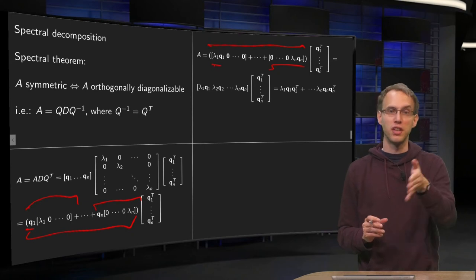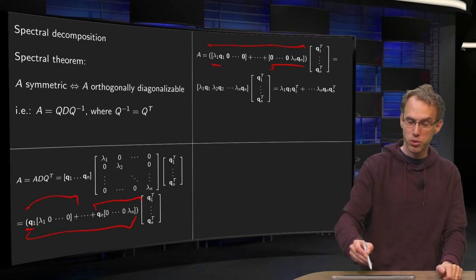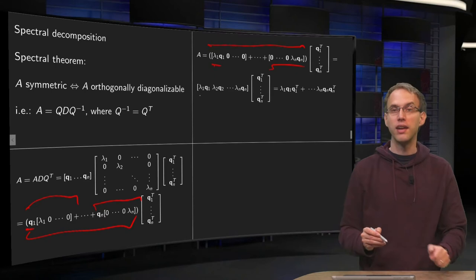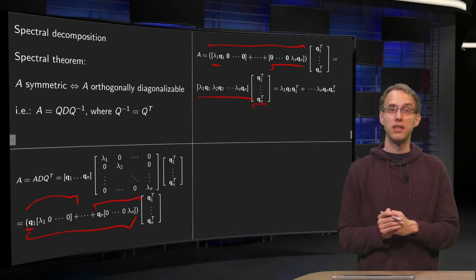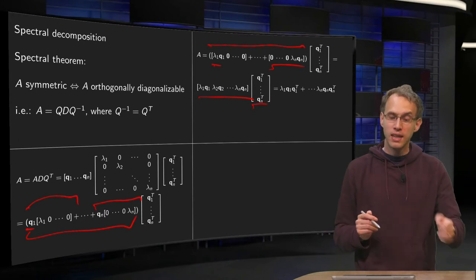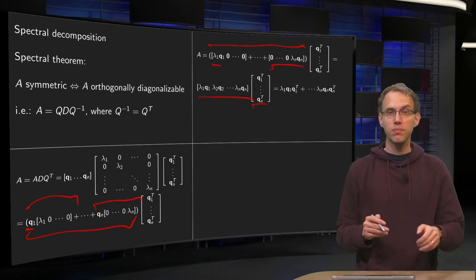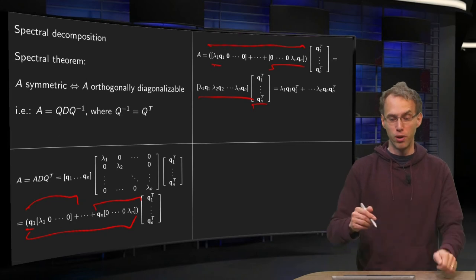First column lambda 1 Q1, second column lambda 2 Q2 and so on. And then you are over here. And we have left this matrix all the times as it is. Now in the last step we are going to use again the column row rule.